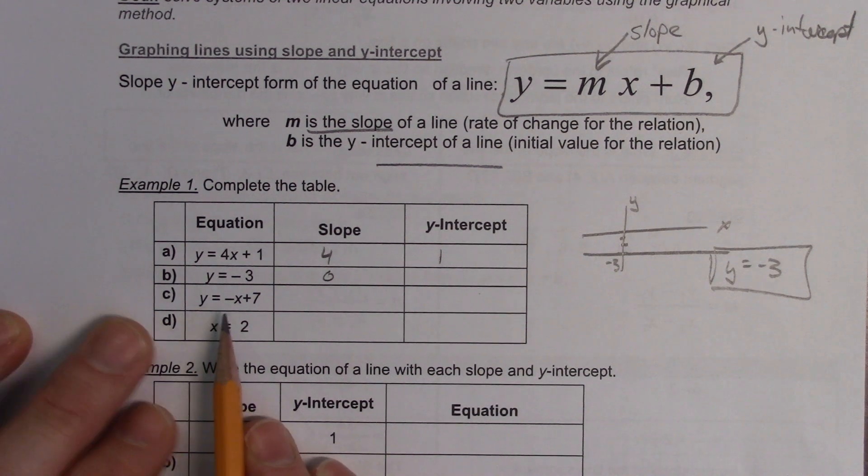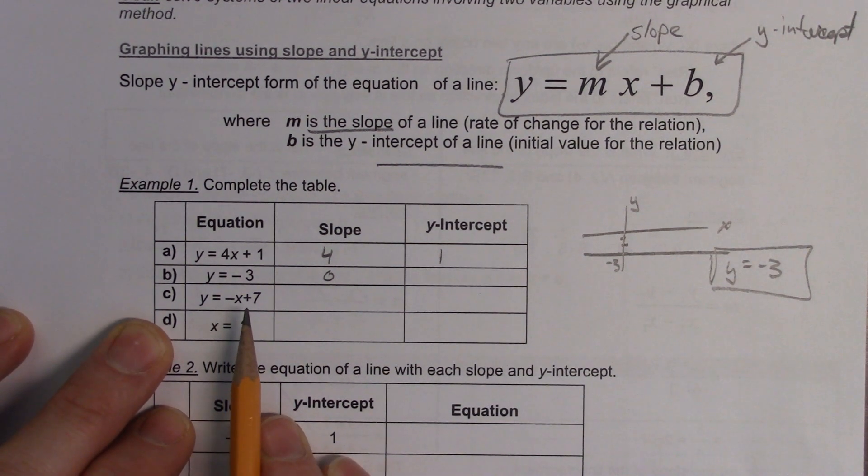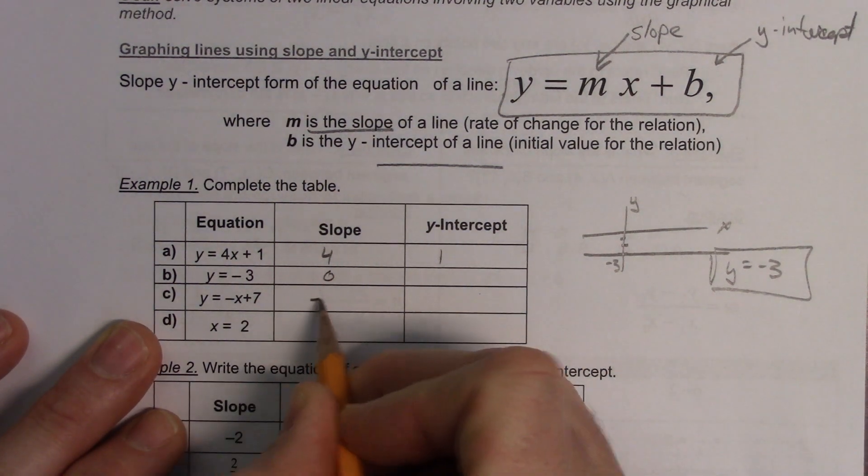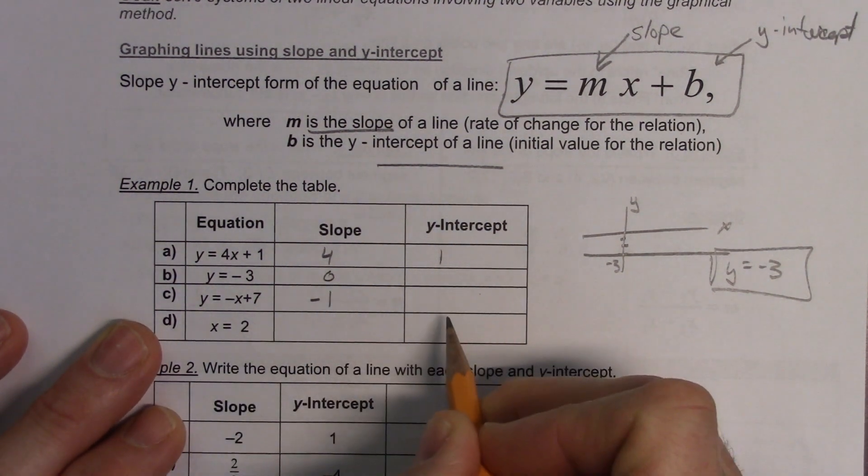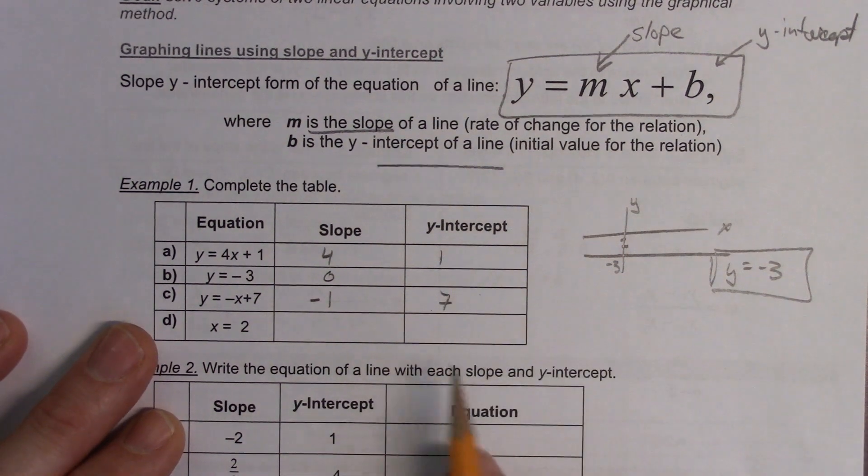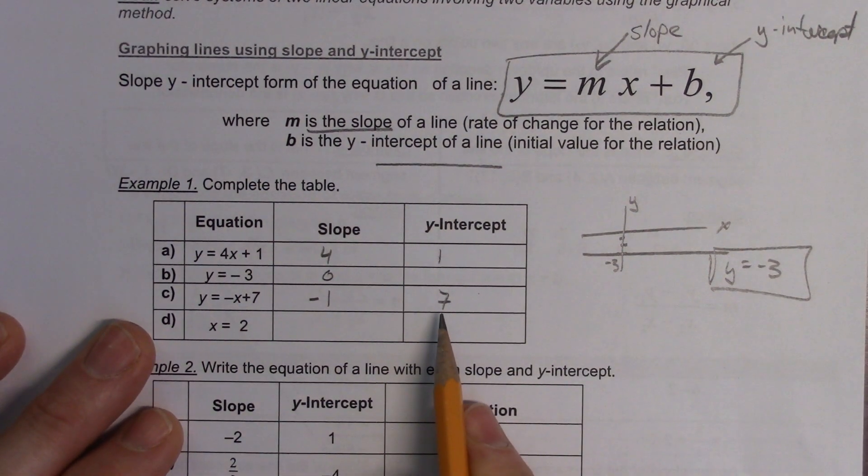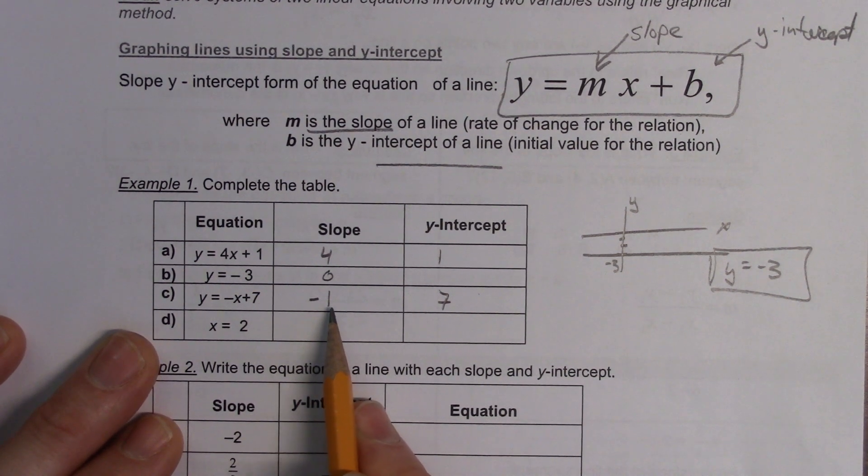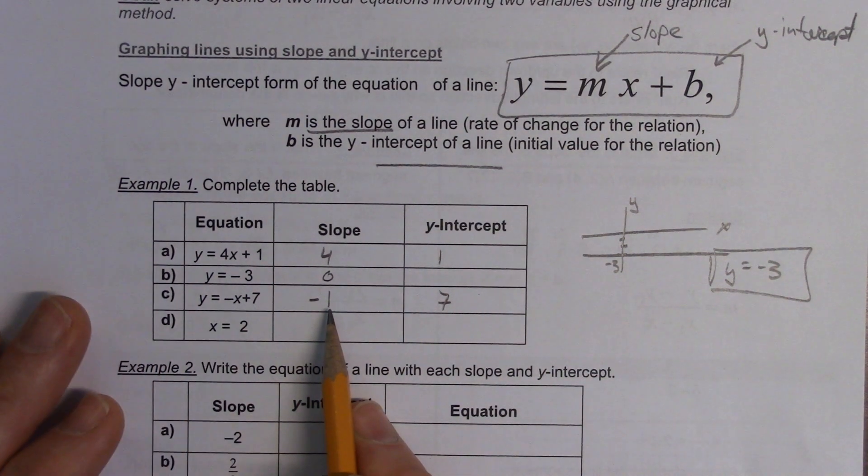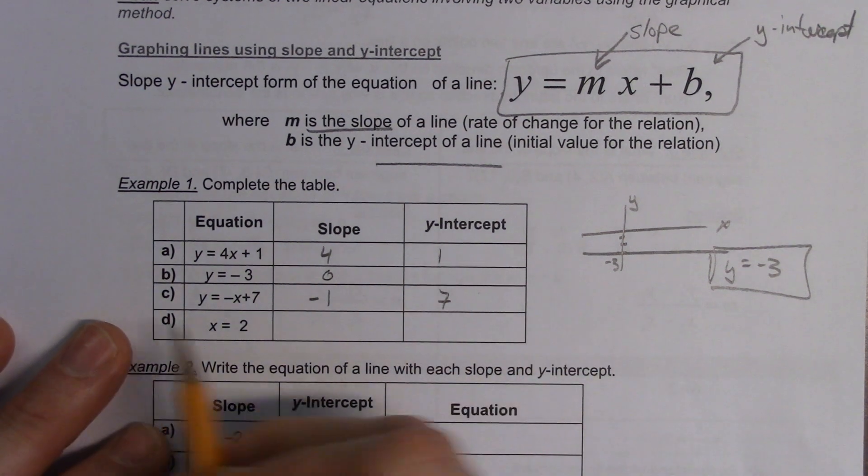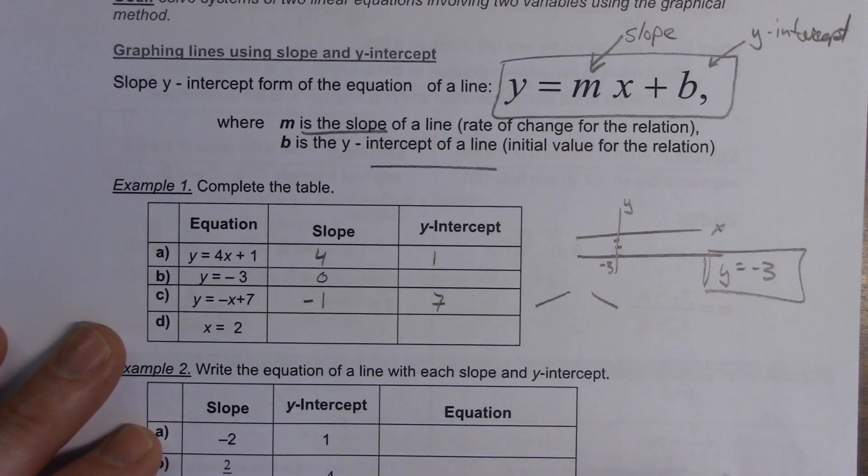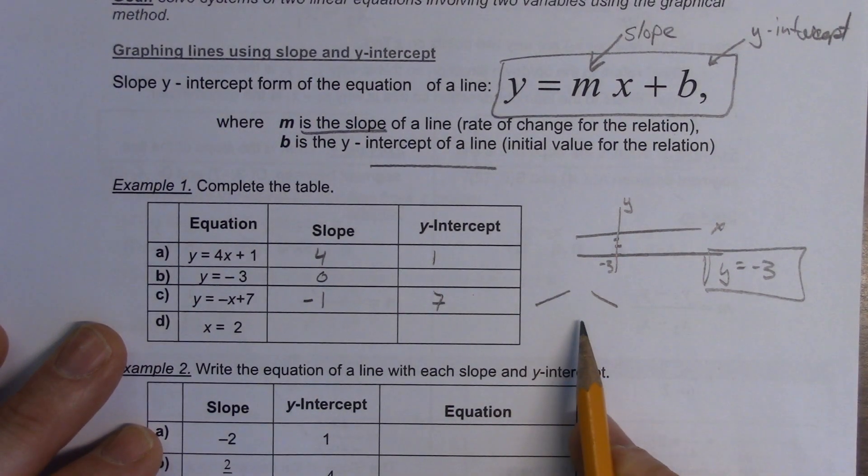Next one, I have y equals negative x plus 7. Yeah, Adrian? This one is negative 1. Negative 1, and the y-intercept? It's 7. Good, plus 7. Does this line go up or down, Chenir? Up or down? My slope is negative 1. Goes up? Like, is it going to go like this, Chenir, or is it going to go like this?